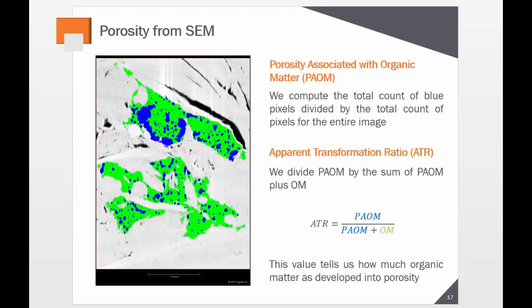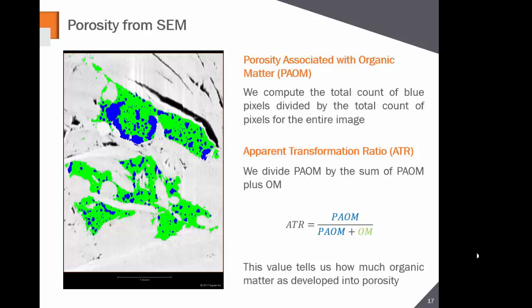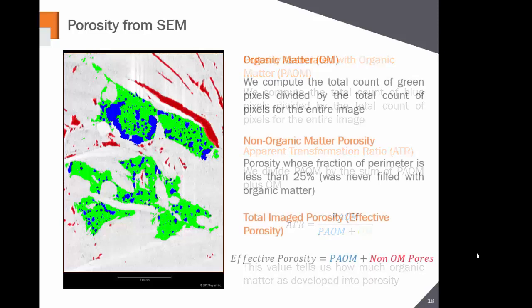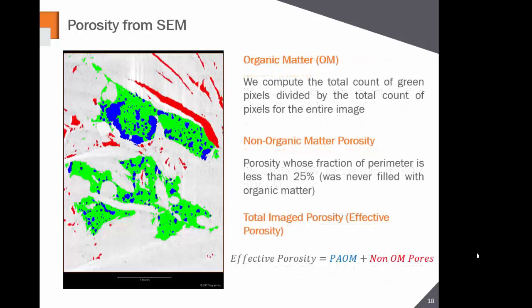Anything that's left over — a pore that didn't meet our cutoff — we call intergranular or intragranular porosity. The sum of PAOM (organic matter-hosted porosity) and intra/intergranular porosity is our effective porosity. We'll go into what that means and how it compares to physical lab measurements.